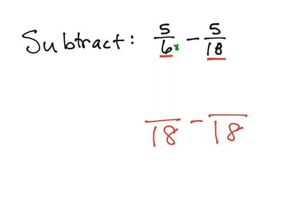So on the left side, again, 6 times 3 is 18. So I multiply the numerator by 3. And 5 times 3 is 15. And on the right side, I didn't change 18. That's the same as multiplying by 1. So that means my numerator is being multiplied by 1.